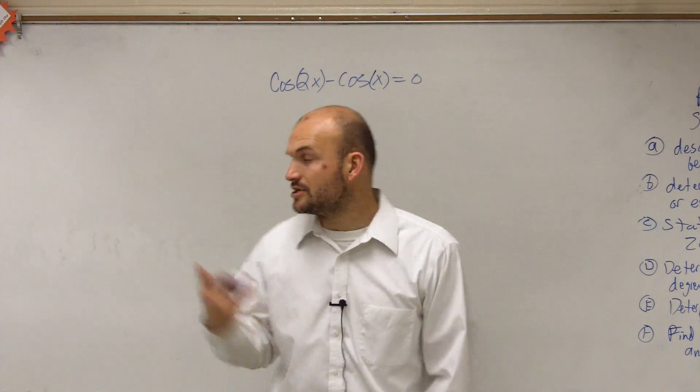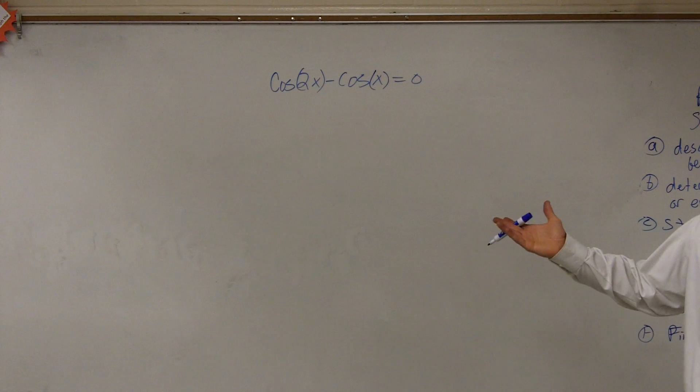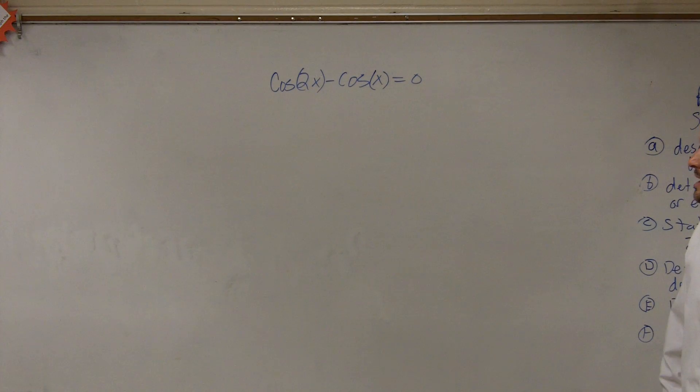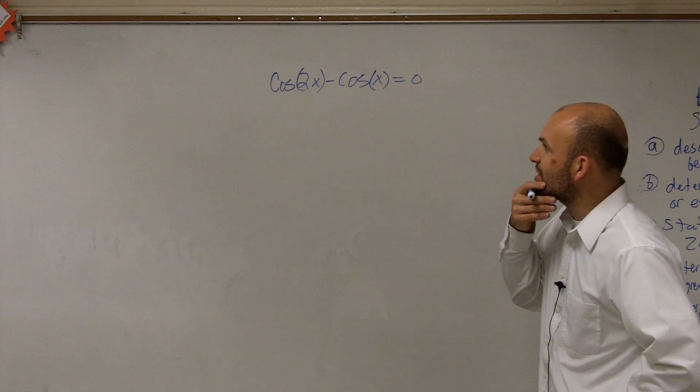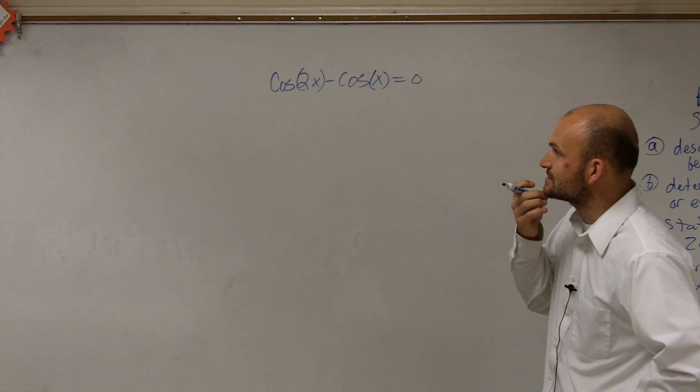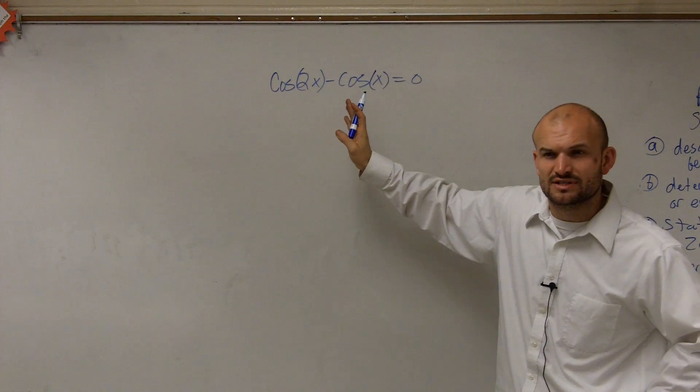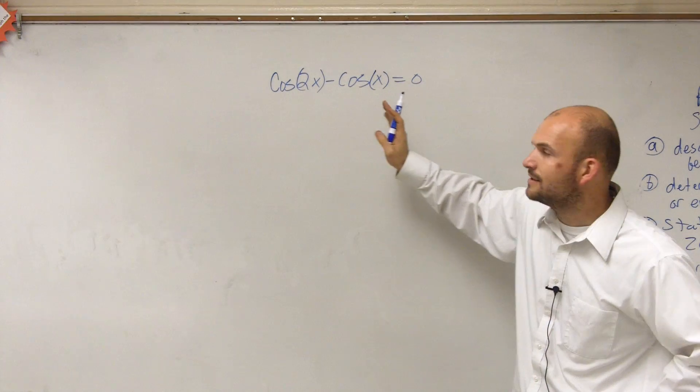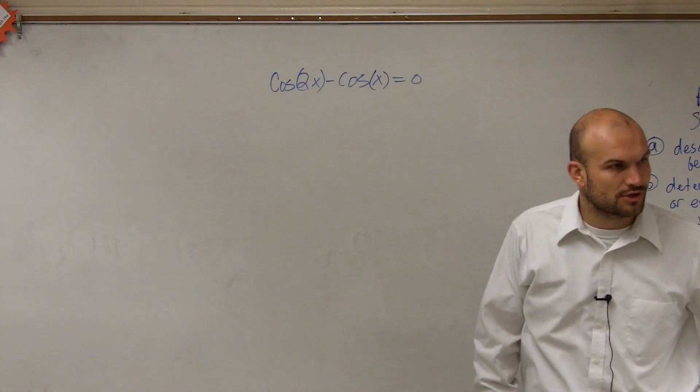So by looking at this problem, we can't combine them. They're not like terms. And I can't really even factor, factoring in and out is going to work this. So what I'm going to look into doing with this is, because my angles are different multiple angles, so it's going to be difficult as far as factoring out a cosine.